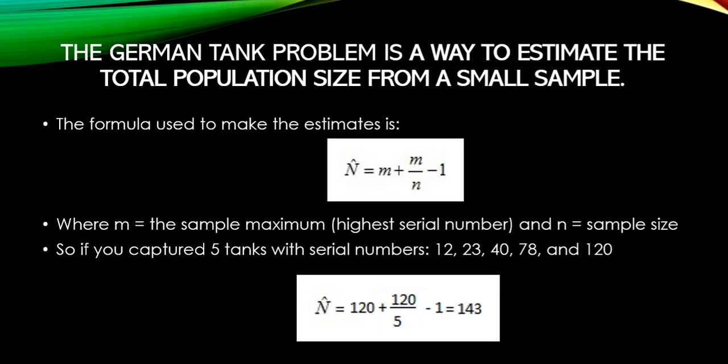The German tank problem is a pretty famous problem — it's a way to estimate the total population size from a small sample. The formula is pretty simple. The capital N-hat is the total number they're predicting the Germans made. Lowercase m is the sample maximum, which is the highest serial number in the sample, and N is the sample size.